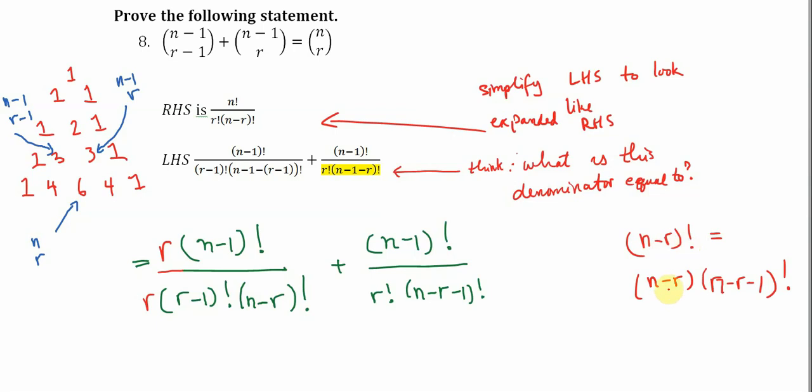a number factorial is that number times that number minus one factorial. So if we want to get this fraction here to be like this one over here, then we need to multiply by n minus r. And we have to do the same thing to the numerator.